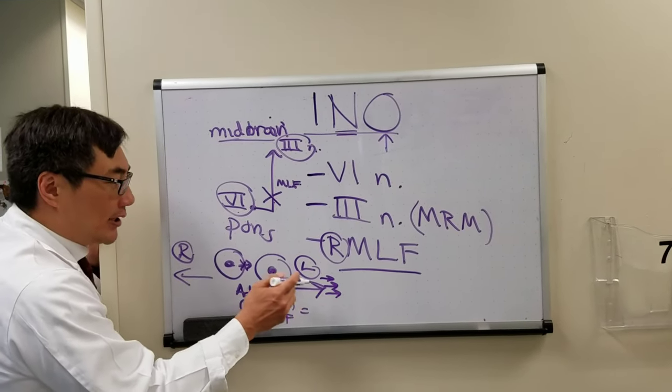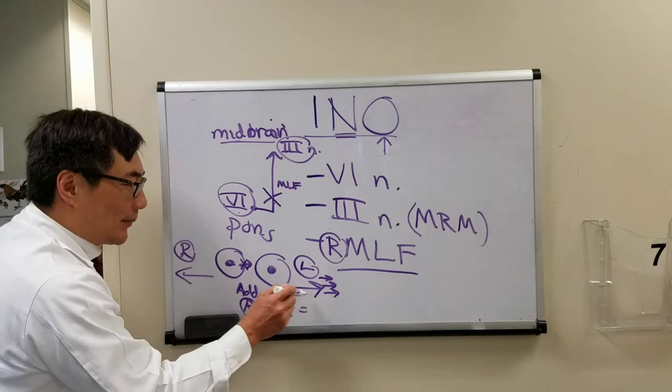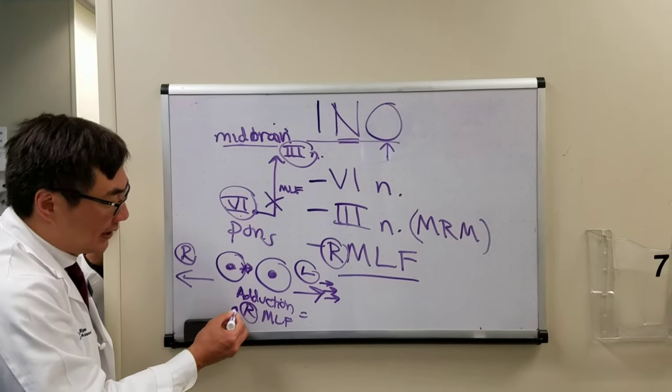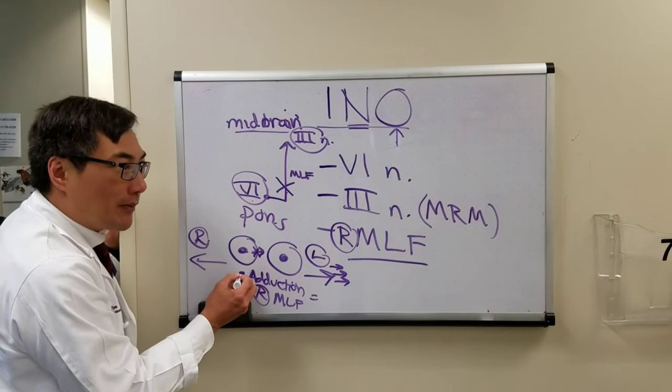So there'll be a dissociated horizontal abducting nystagmus on attempted gaze to the left in a patient who has a right medial longitudinal fasciculus lesion from a right internuclear ophthalmoplegia.